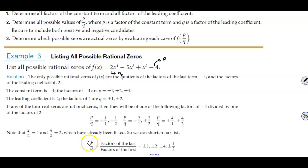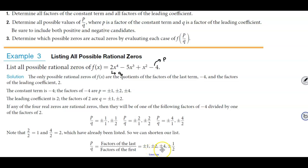So we have p over q, where the numerator p is the factors of the last term and q is the factors of the first term. All the possible rational zeros for this function are plus or minus 1, plus or minus 2, plus or minus 4, and plus or minus one-half.